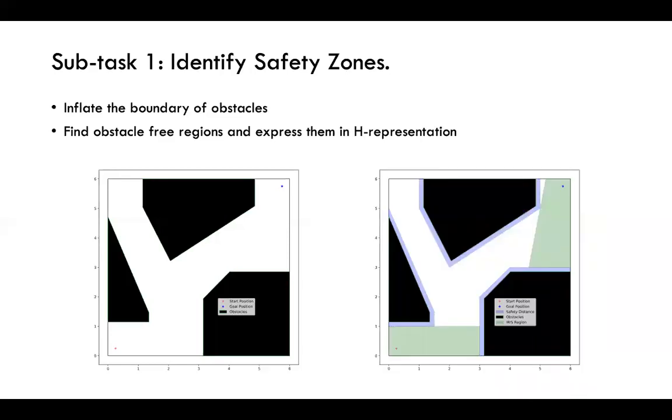So I put my seed first at the goal point and at the initial point. So these two green regions are the first two generated IRIS regions. What I do next is that I developed a simple mechanism such that I am able to put seeds randomly at the free space such that I can generate a certain amount of IRIS regions that are free of obstacles.